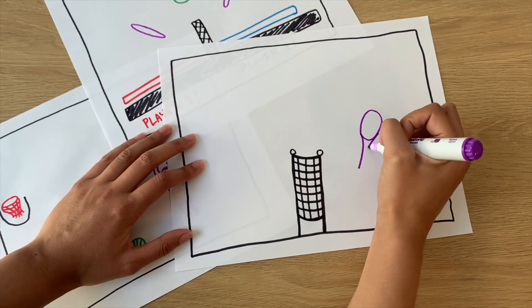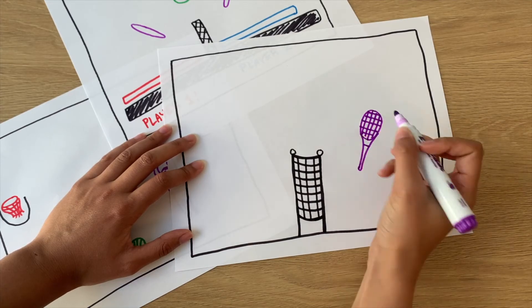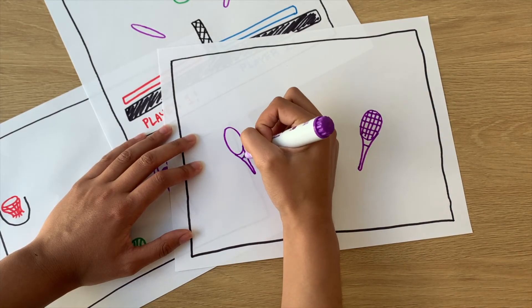If your game is too hard or you're unhappy with it, try again with a new drawing. Trial and error is part of the game design process.